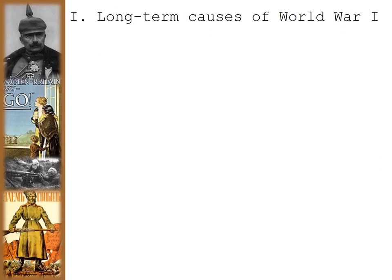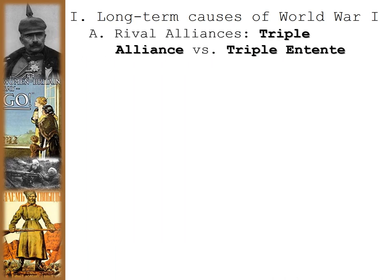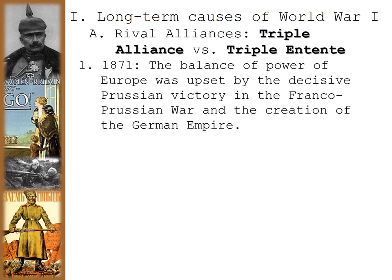First we're going to discuss the long-term causes of World War I. We've been building up to this war for quite some time now, so let's talk about these long-term causes first, and then we'll talk about the short-term, meaning the immediate causes. Rival alliances were part of the long-term causes — the Triple Alliance and the Triple Entente had been formed prior to the war.